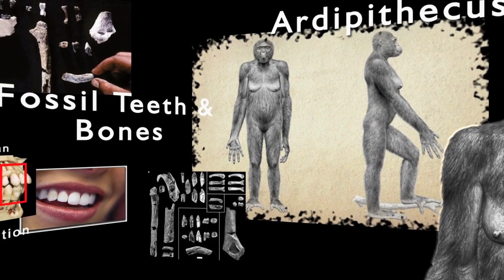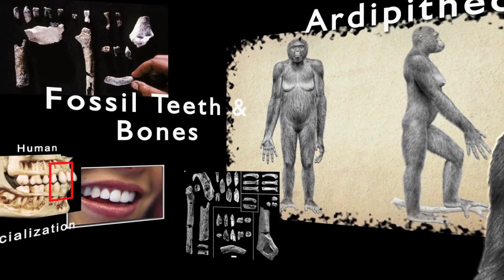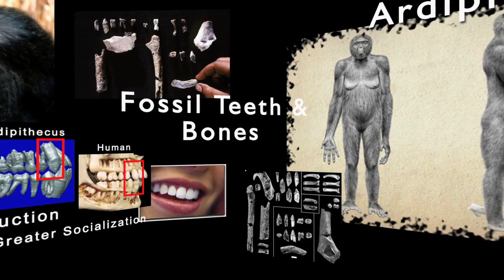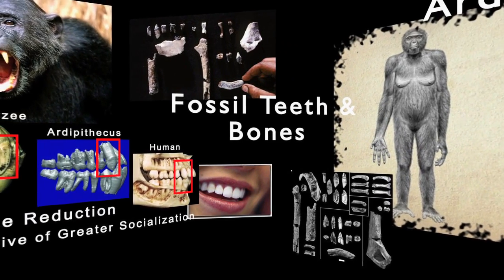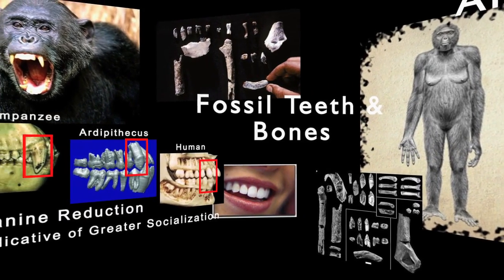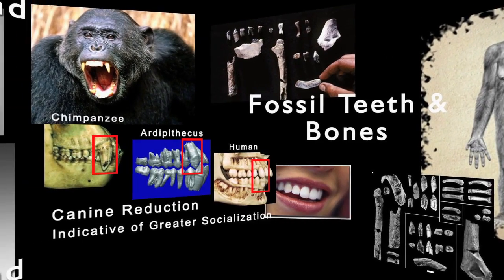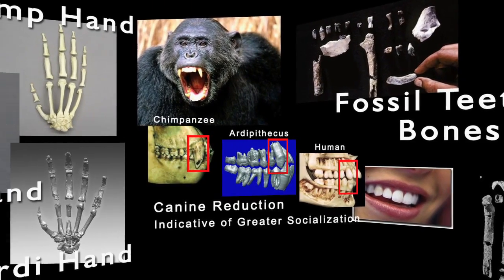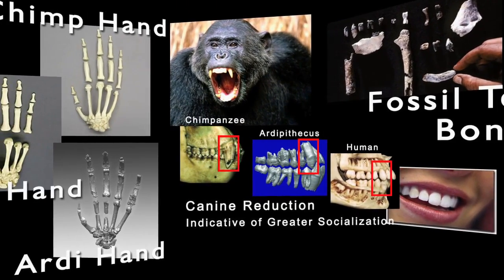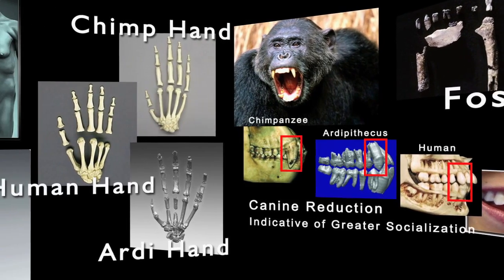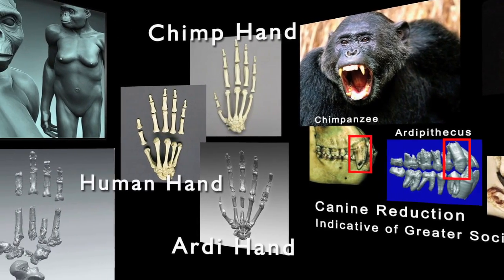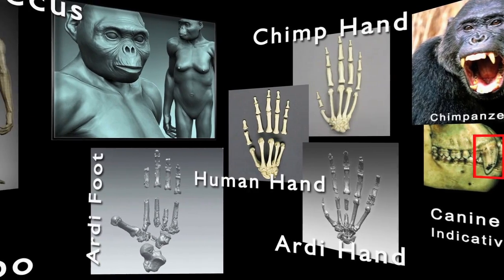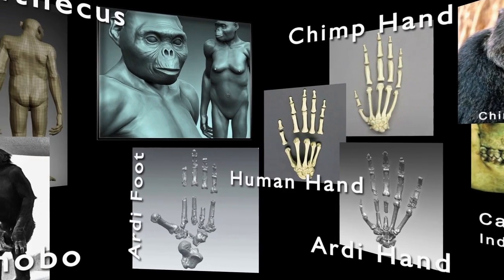To the untrained eye, these fossils may seem to hold little of interest, but to a paleoanthropologist, they reveal insights into the lifestyle of one of our ancient ancestors. Teeth, in particular, can be very informative — they can give us information on diet and social adaptations. Finger bones can tell us about their hands and how they use them. Toe bones can tell us whether an animal is adapted for climbing or walking.